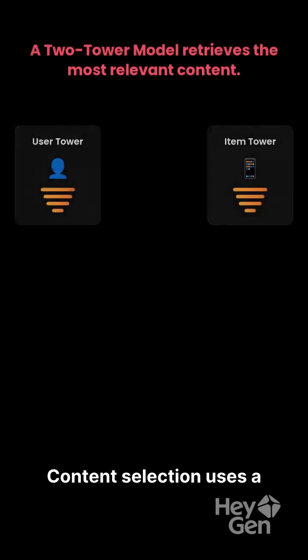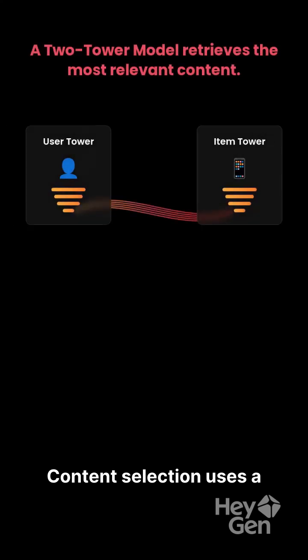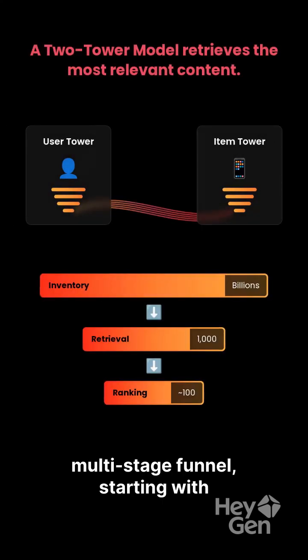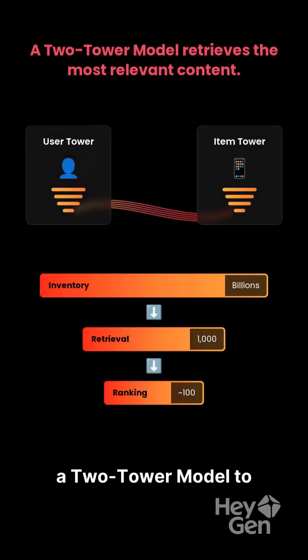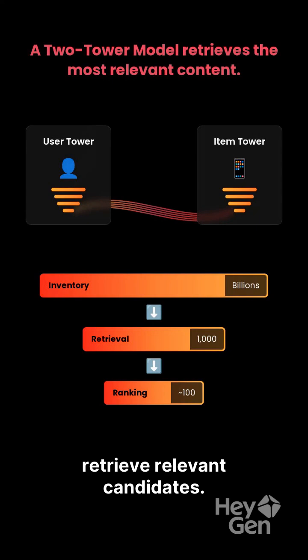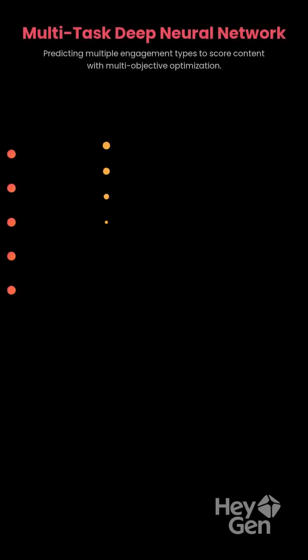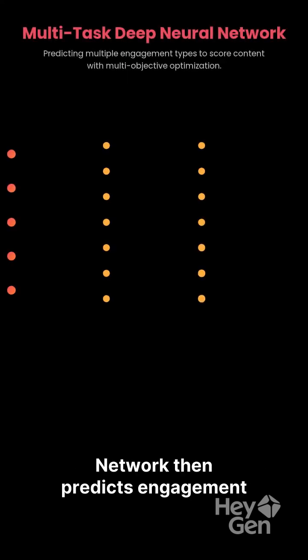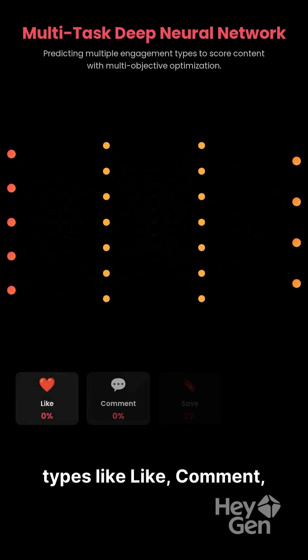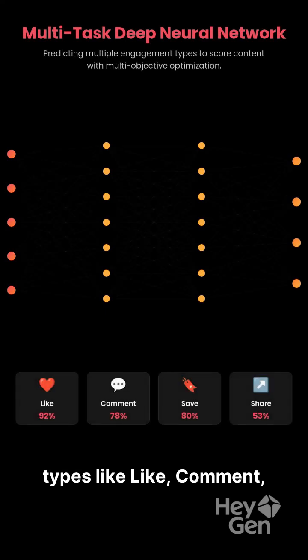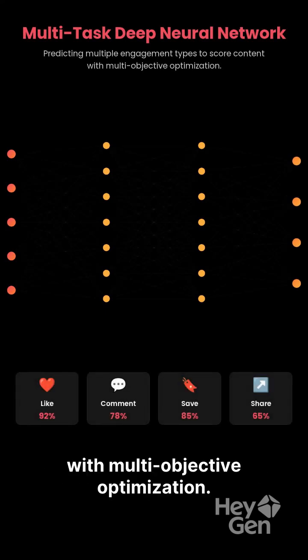Content selection uses a multi-stage funnel, starting with a two-tower model to retrieve relevant candidates. A multi-task deep neural network then predicts engagement types like like, comment, and save, scoring content with multi-objective optimization.